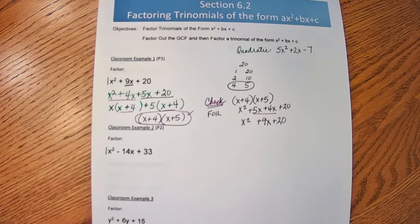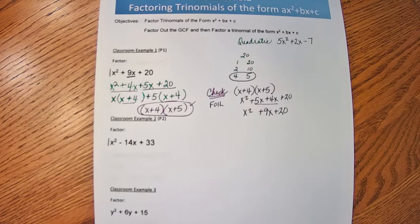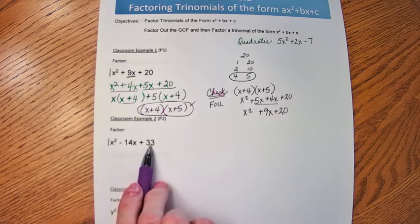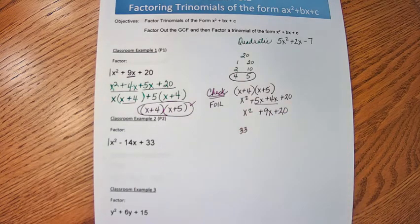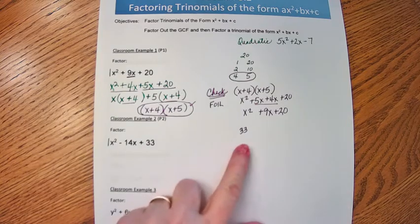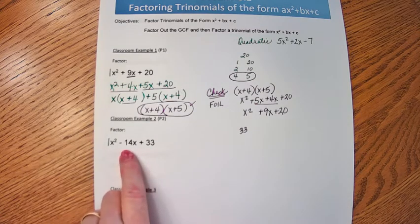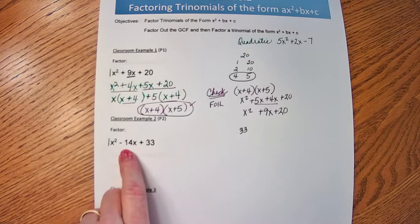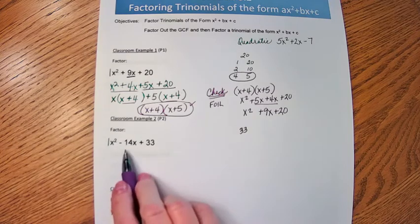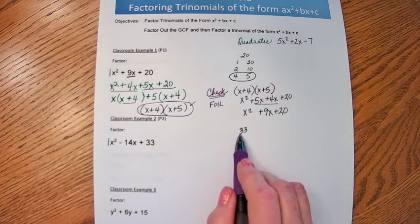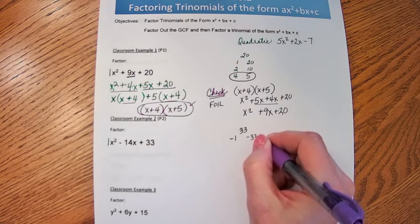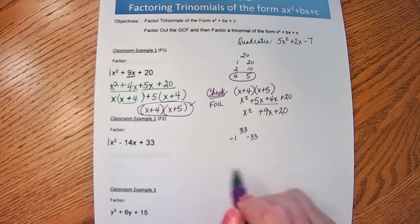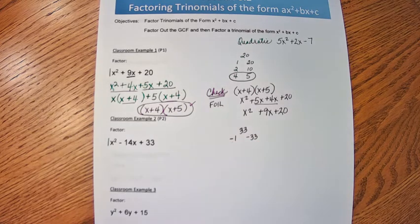Let's look at classroom example 2. Okay, my c term is 33. I want numbers, when they're multiplied together, give me a positive 33. But when they are added together, they give me a negative 14. So this means they must be two negative numbers. Because if I want them to be multiplied to a positive, both numbers have to be negative. So negative 1 times negative 33 would be 33. But those don't add up to negative 14.